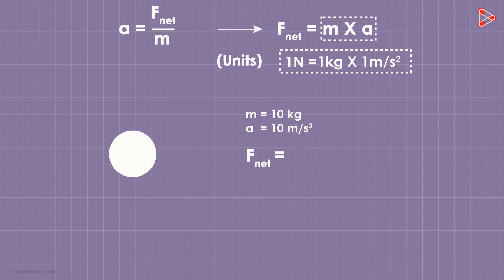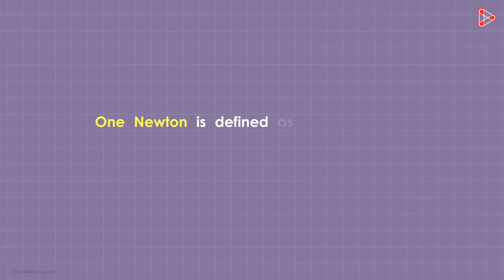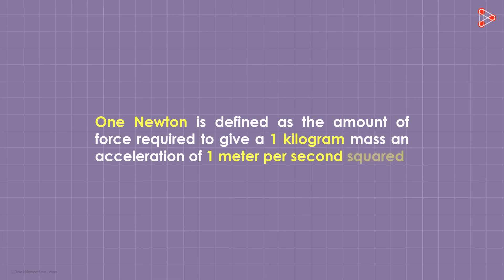So if the mass of the object is 10 kilograms and the acceleration is 10 meters per second squared, then the force will equal 100 Newtons. We can say that 1 Newton is defined as the amount of force required to give a 1 kilogram mass an acceleration of 1 meter per second squared.